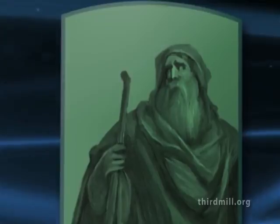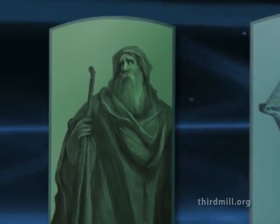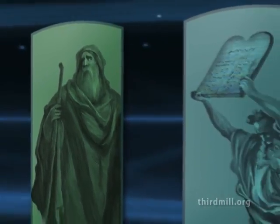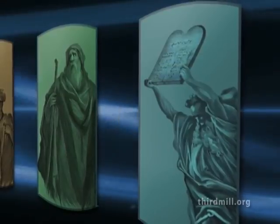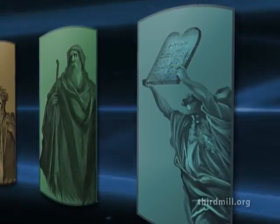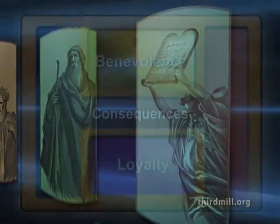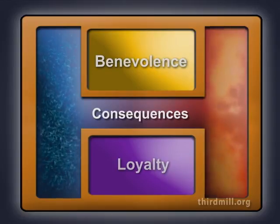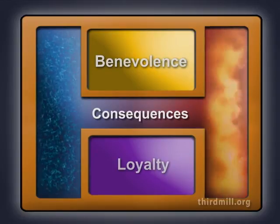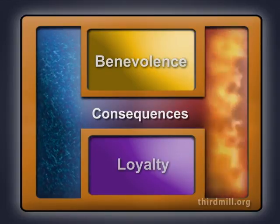Whenever we study the stretch of time between Abraham and Moses, we find that the emphases of God's covenant with Abraham marked the entire period. God's special benevolence toward Abraham and his descendants, his specific requirements of loyalty from the patriarchs, and examples of blessings and curses for the fathers of Israel appear time and again.